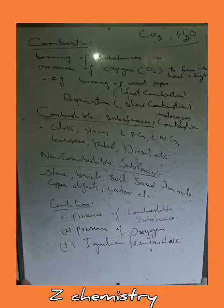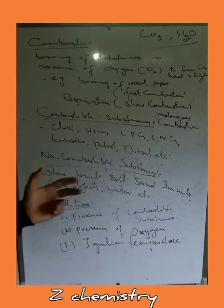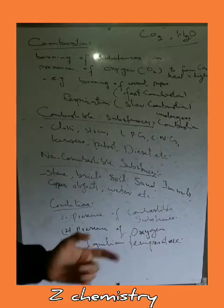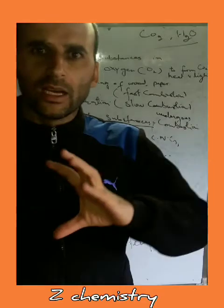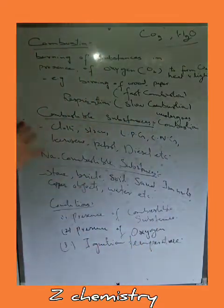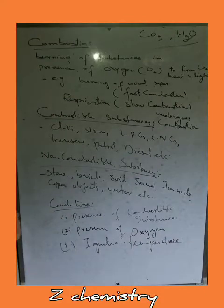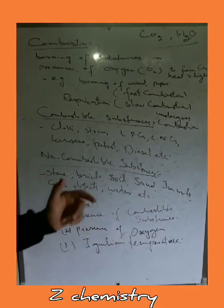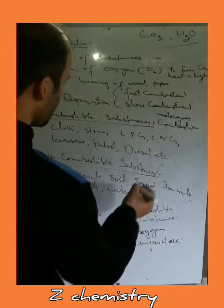Examples of combustible substances include fabric or cloth, LPG — liquefied petroleum gas — or CNG — compressed natural gas — kerosene, petrol, and diesel. These are the combustible substances; they all undergo the process of combustion. On the other hand, there are substances which do not undergo combustion, such as stone, brick, soil, sand, iron nails, copper objects, and water. Such substances are called non-combustible substances — they do not show combustion.